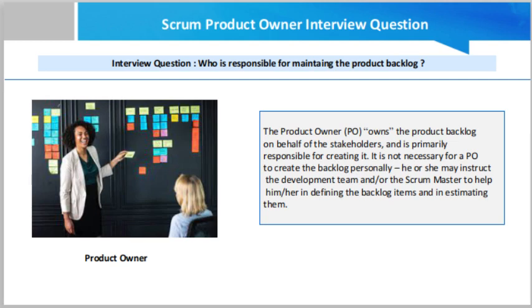The product backlog corresponds to your project plan — the roadmap for work the team plans to deliver. After the team defines it, they have a prioritized list of features and requirements to build. The product backlog also provides a repository of all the information the team needs to track and share among themselves.